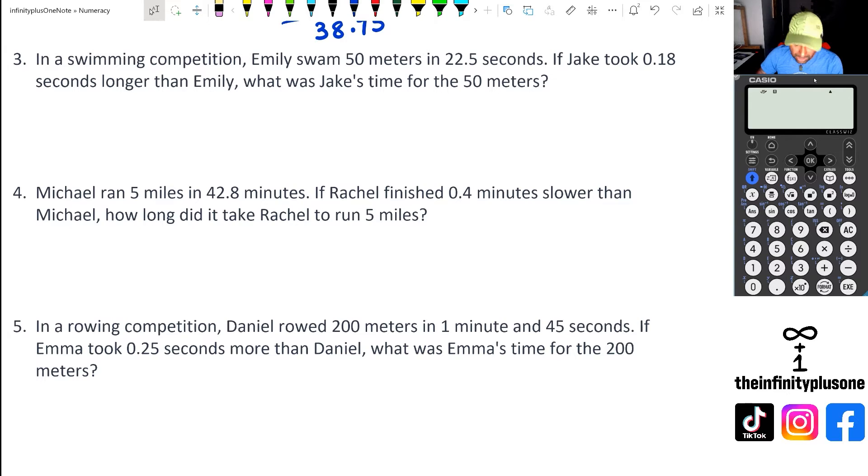We're going to continue with question three. We've got 50 meters in 22.5 seconds for Emily, and Jake took 0.18 seconds longer. So Jake's time, we add these two values up: 8, 6, and then 2 plus 0 is 2. So the answer is 22.68.